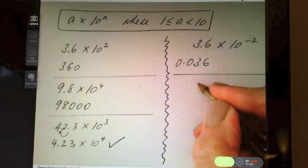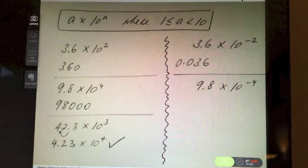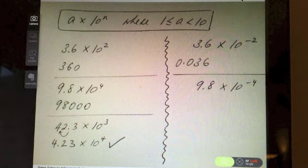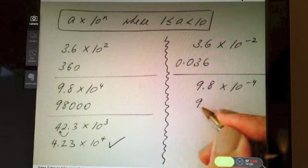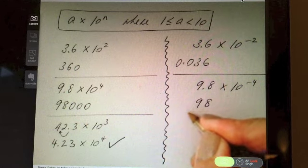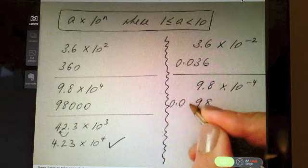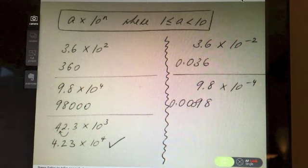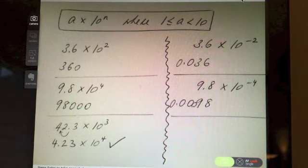Take, for example, then, 9.8 times 10 to the minus 4. Pause the video. Write down what you think that would be as an ordinary number. And, of course, we have the decimal point here, and it's going to move one, two, three, four. So, we have 0.00098.